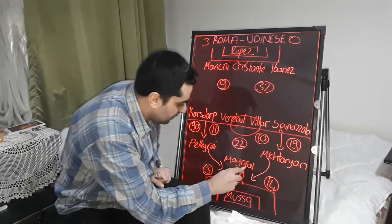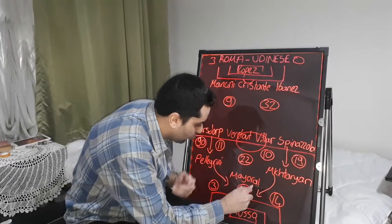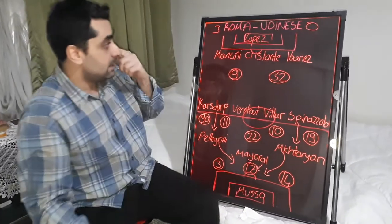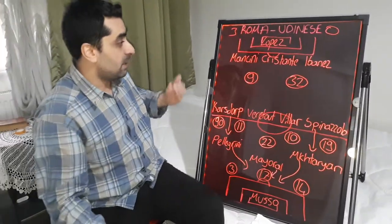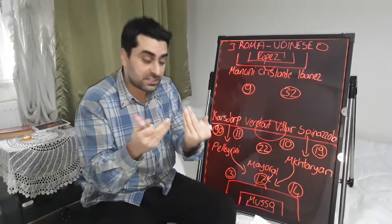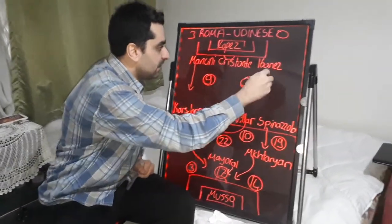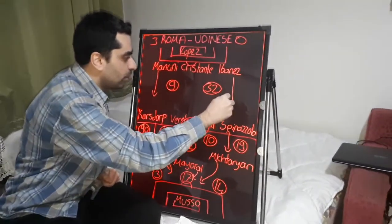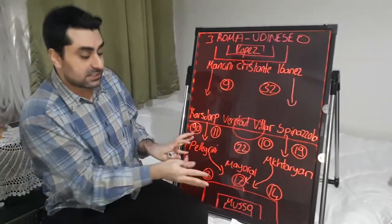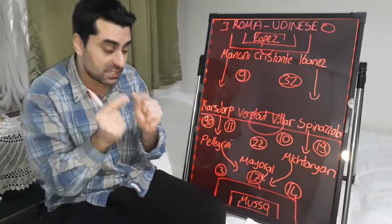Borja Mayoral played close to defender Neuking. And sometimes in corner kicks and free kicks, Mancini and Ibanez came forward and got into the box, searching for goal positions.